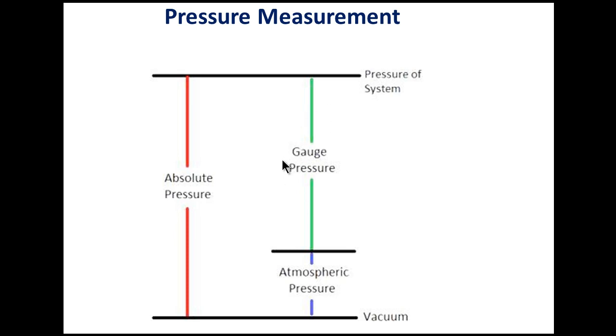Pressure measurement classification: mechanical and electromechanical. In mechanical — static types include manometer, well type, and inclined type; dynamic types include diaphragm, bellows, and Bourdon tube. Bourdon tube has three types: C-type, helical type, and spiral type. Diaphragm types include flat, corrugated, and capsule type.